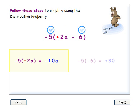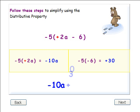Step 3: Multiply the negative 5 with the second term inside the parentheses, negative 6. And step 4: Write down both answers in the order you got them.